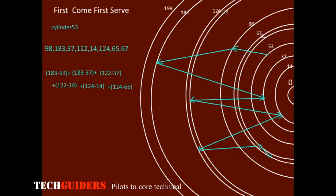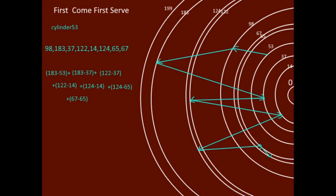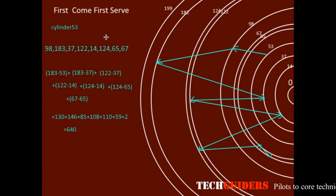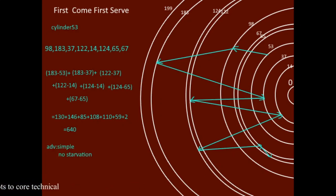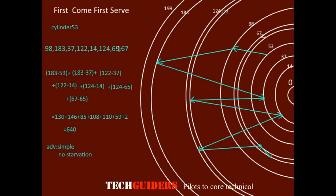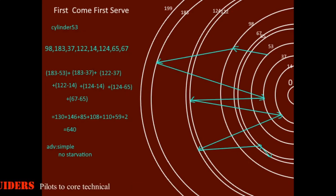Let us continue our discussion on different disk scheduling algorithms. As mentioned in the previous video, we have 640 cylinders to be crossed by the read/write head. There are different scheduling approaches: circular scan, circular look — these are different ways the disk head reaches different cylinder positions. All requests will be served in a particular order to minimize seek time.